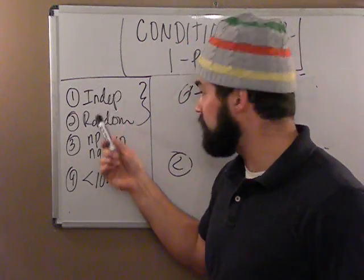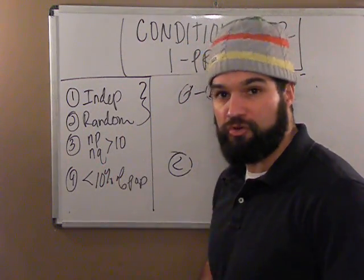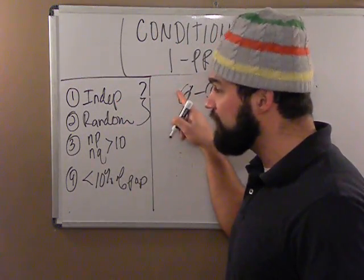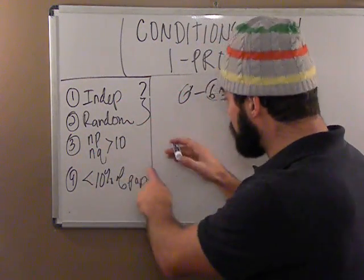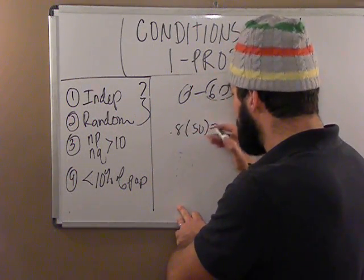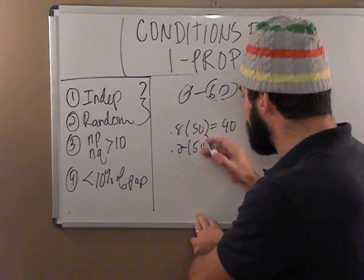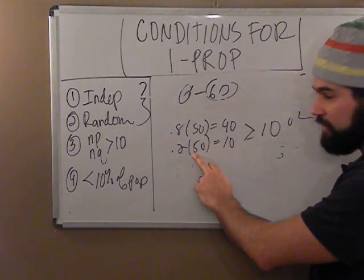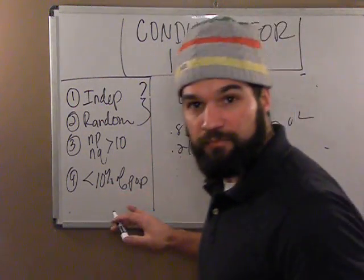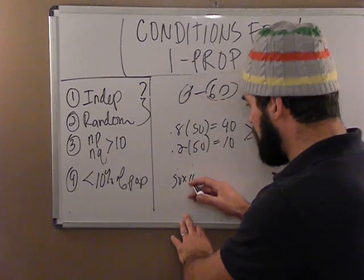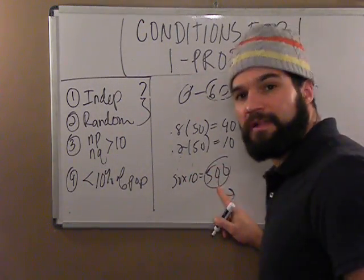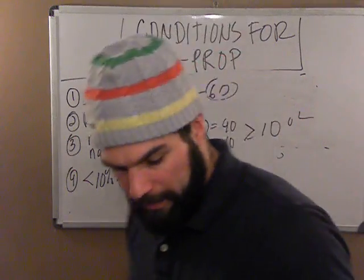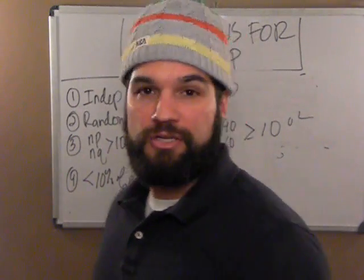Those are the three conditions. Make sure it's random — you generally assume independence but must write why. Check NP and NQ and make sure they're greater than 10. You won't get credit on your test if you just write 'NP, NQ greater than 10' — you have to show the calculation. For example: 0.8 × 50 = 40 and 0.2 × 50 = 10, both ≥ 10, okay to proceed. And for the 10% condition with n = 50, note that 50 × 10 = 500, so the population is most likely larger than 500.